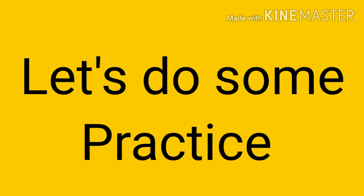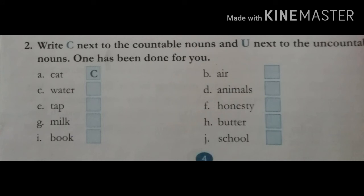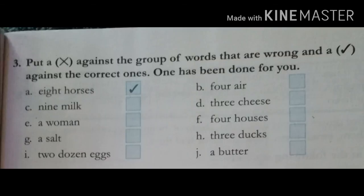Uncountable noun means aise nouns jinnhe hum count nahi kar sakte hain. Let's do some practice. Now look at the sheets. Your question is: write C next to the countable nouns and U next to the uncountable nouns. One has been done for you. For example, cat — hum count kar sakte hain, toh it is C, countable noun. Water — hum water ko count nahi kar sakte hain, toh water is U, uncountable noun. Tap is a countable noun. Milk — but we cannot count milk, toh milk is uncountable noun. Book — hum count kar sakte hain, it is C, countable noun. So like this, you have to complete the exercises.